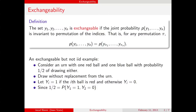The probability of drawing a red ball and then a blue ball is one half, which is exactly the same as the probability of drawing a blue ball and then a red ball. So this set of random variables is exchangeable, because the probability doesn't depend on the order in which the balls are drawn.